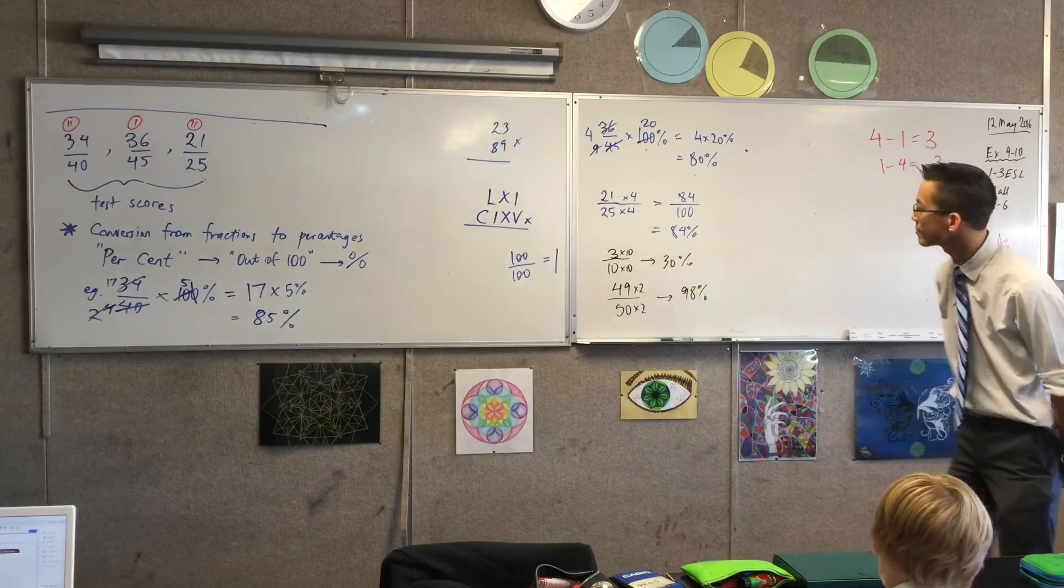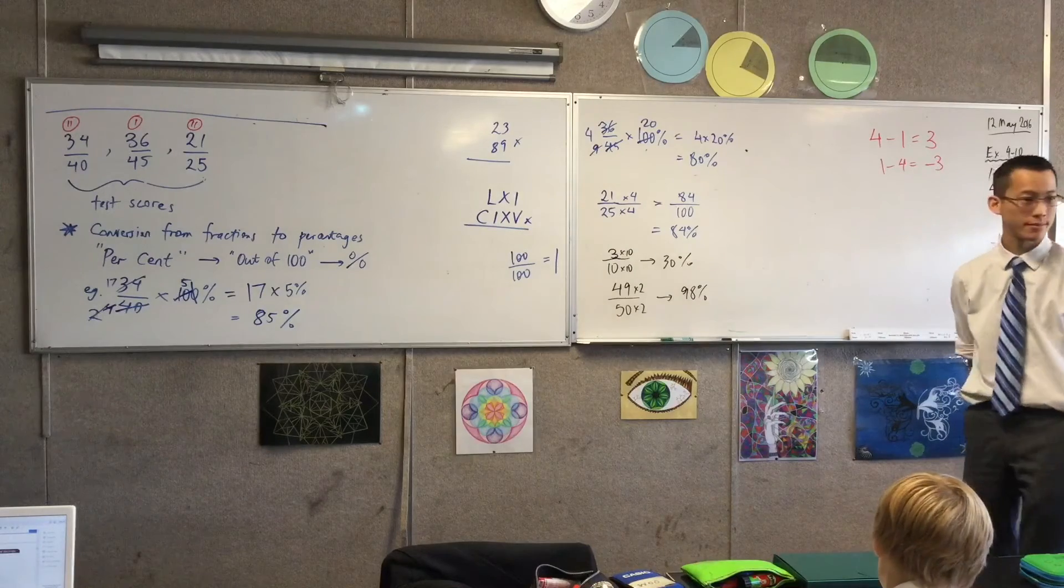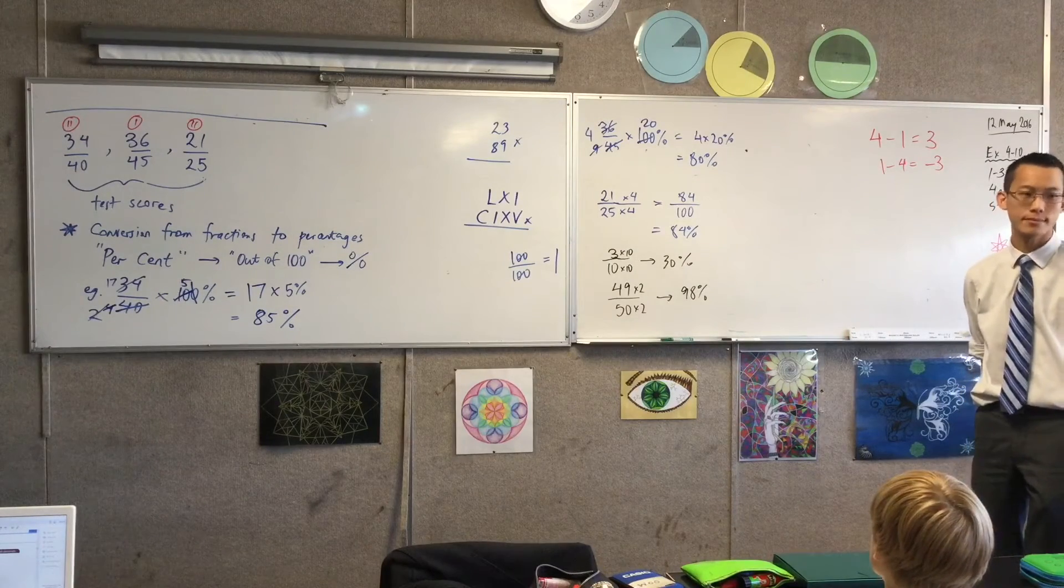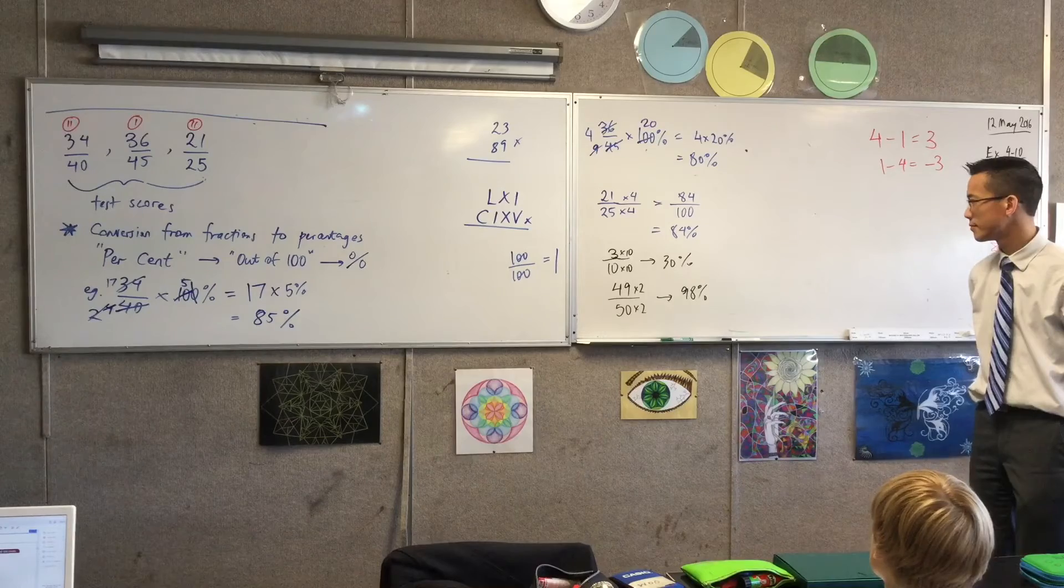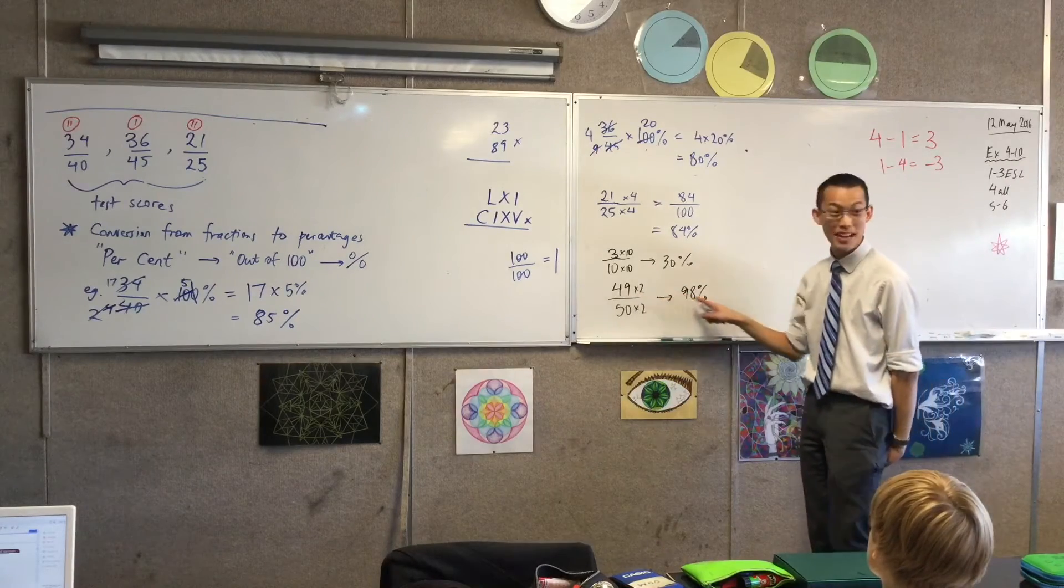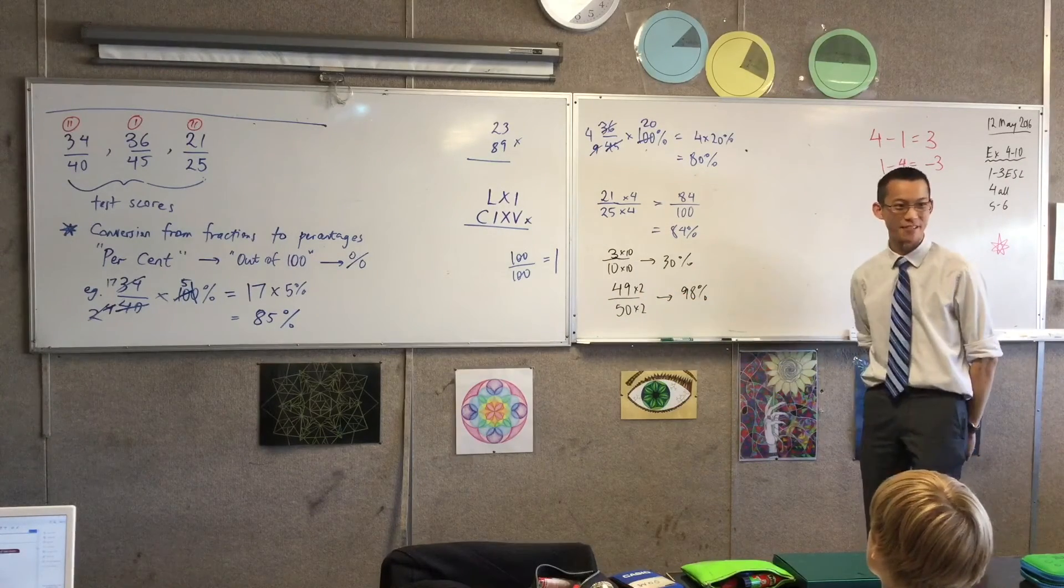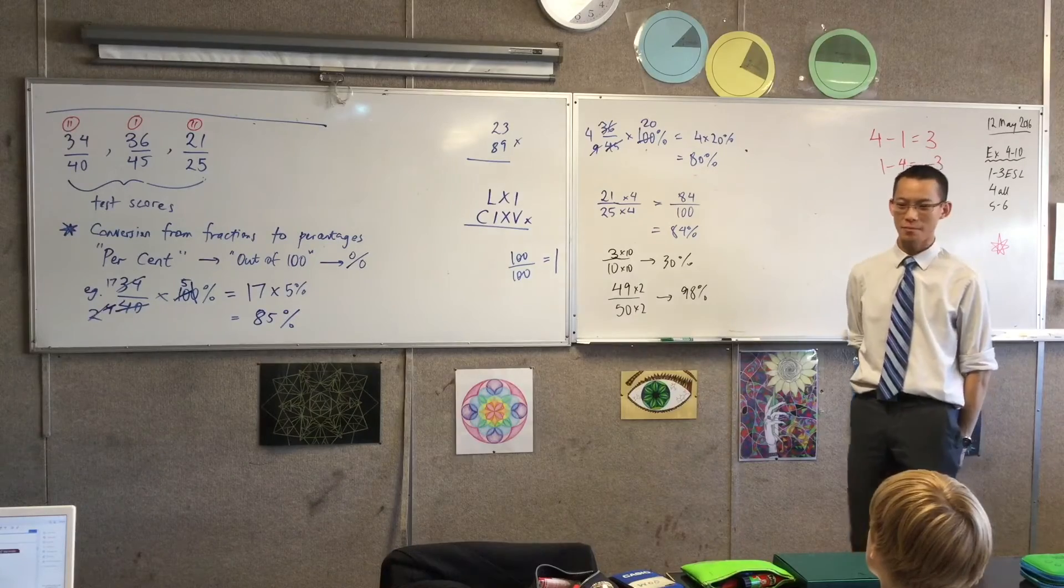If I double it, it's going to become 98, not 99. Right? 49 times 2. Okay?